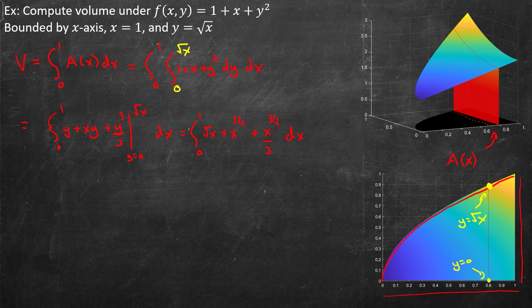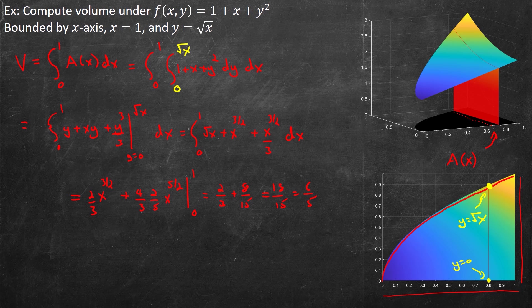All of this is now integrated with respect to x. x to the 1/2 becomes (2/3)x to the 3/2, and combining the two x to the 3/2 terms gives (4/3)x to the 3/2, which integrates to (4/3)·(2/5)x to the 5/2. Evaluated between 0 and 1, this gives 2/3 plus 8/15. Finding a common denominator gives 10/15 plus 8/15 equals 18/15, which equals 6/5. That was integration with respect to y on the inside and x on the outside.